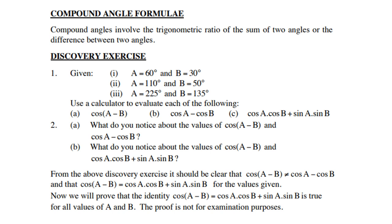Let's do the following discovery exercise. Given: number one, A is 60 and B is 30; number two, A is 110 and B is 50; and number three, A is 225 and B is 135. Use a calculator to evaluate each of the following: first, cos(A minus B) — that means cos(60 minus 30) — then cos A minus cos B separately, and then cos A cos B plus sin A sin B. Do that and see what your outcomes are.